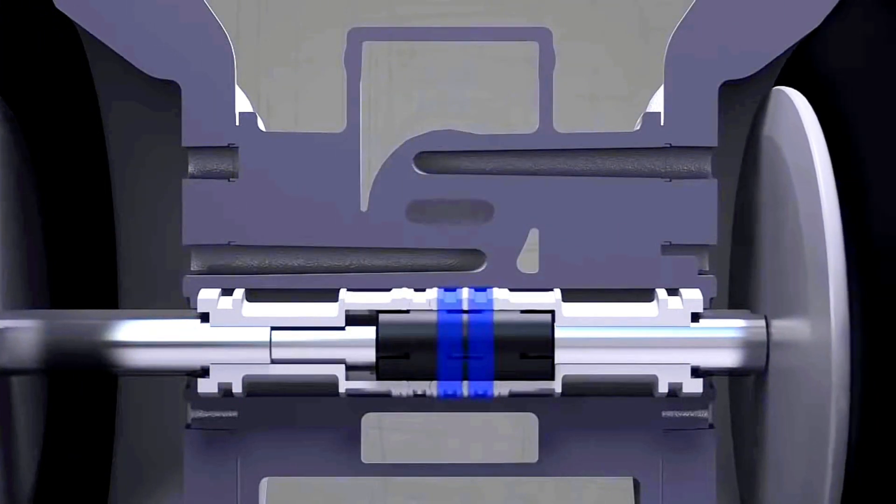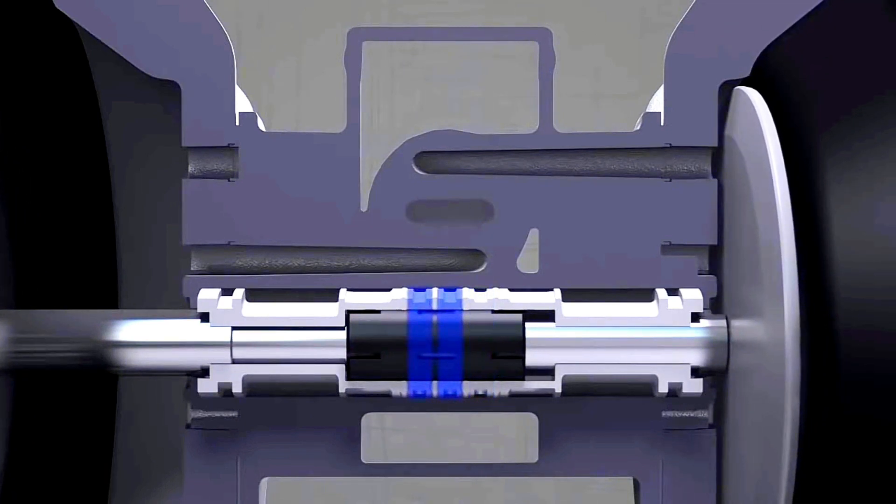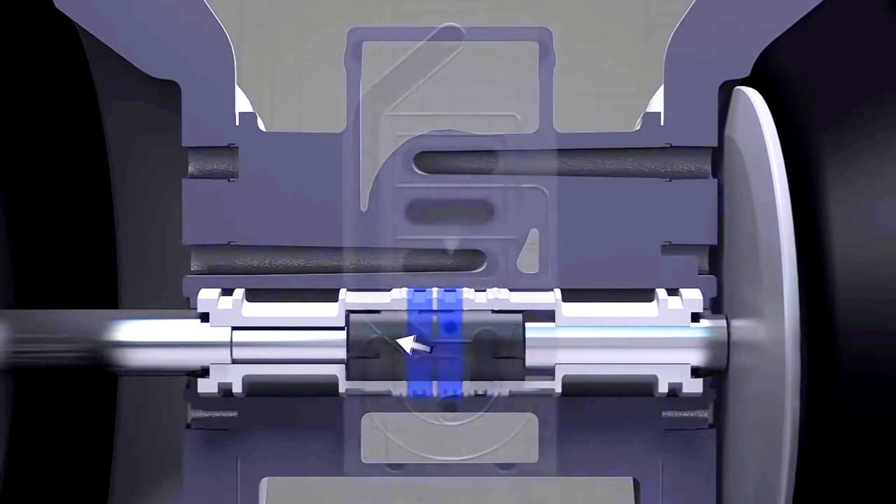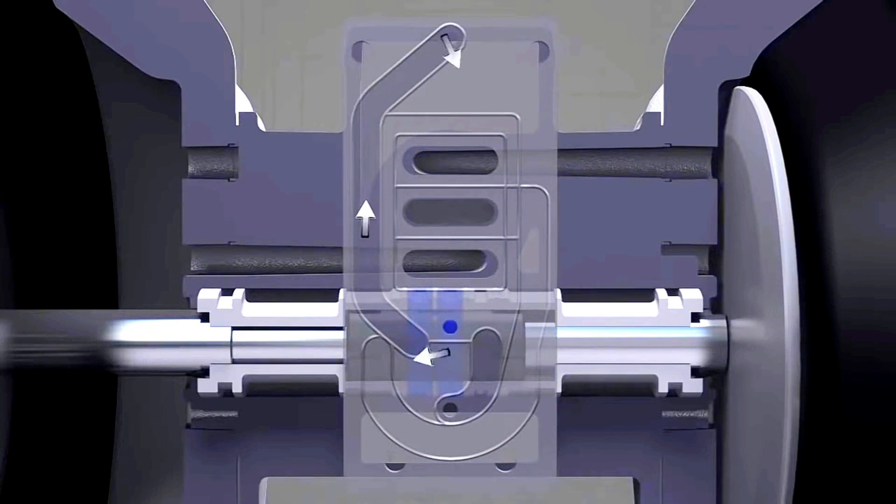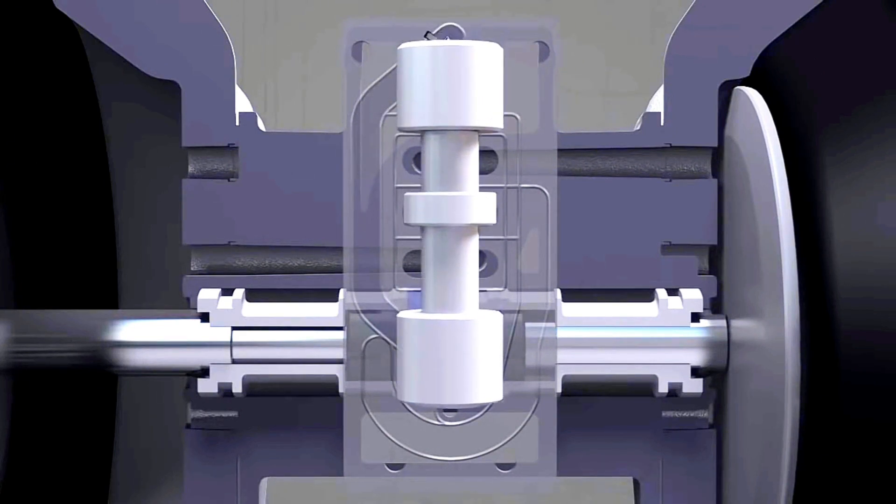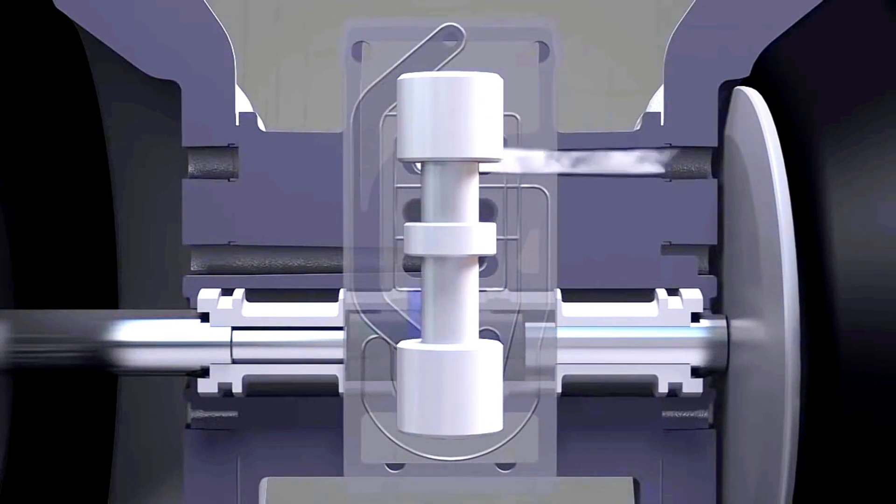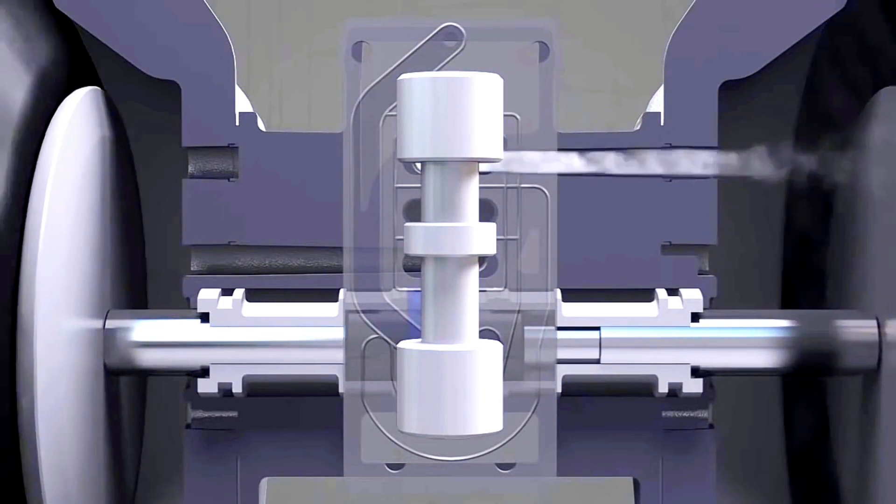When the pilot air valve travels far enough to the left, chamber three connects to chamber two and the air moves the main air valve downward. This causes the right diaphragm to pressurize and the pilot valve to begin moving right.